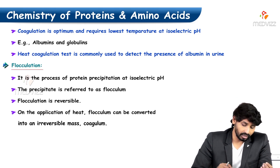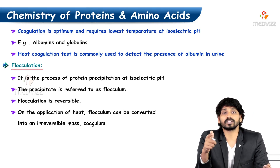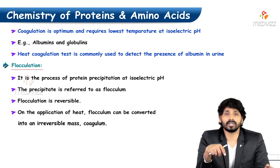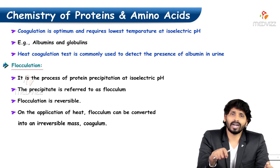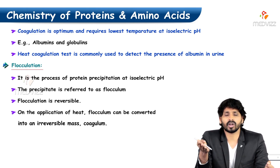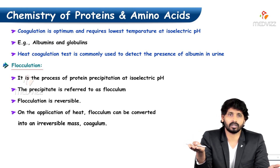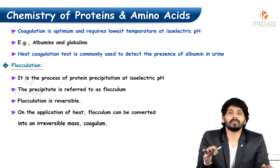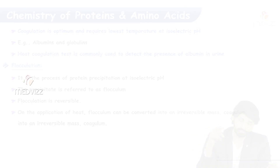Flocculation is a process of protein precipitation by using isoelectric pH, and it is reversible. Adding a chemical brings the solution to the isoelectric pH, converting the protein into a zwitterion and causing it to precipitate as a flocculate. However, on application of heat, this flocculum can be converted into an irreversible mass called a coagulum.